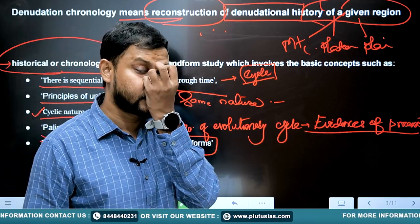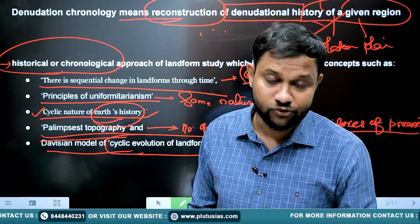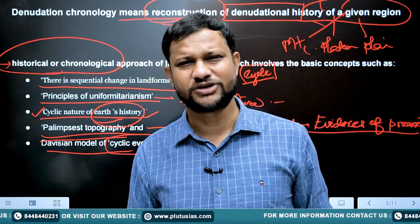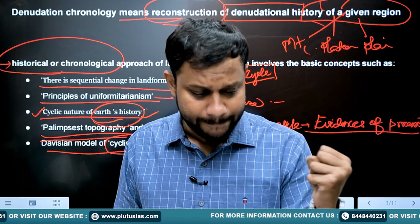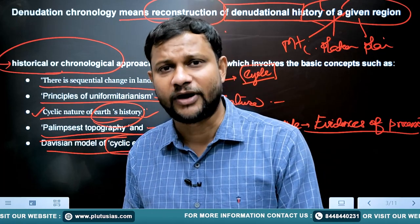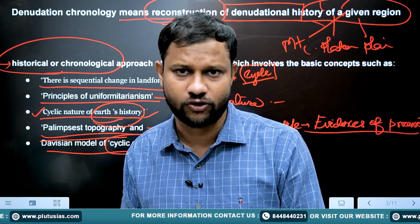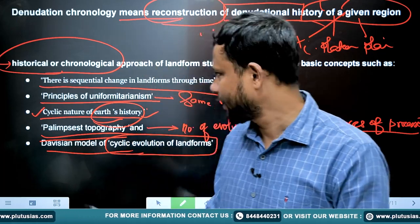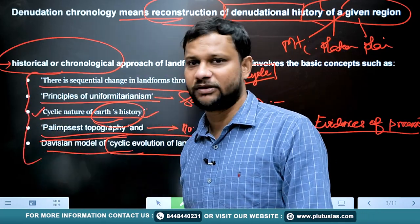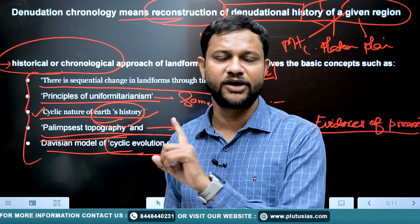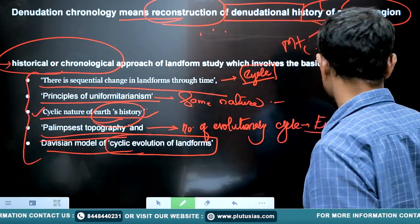The fifth founding principle is Davis's model of cyclic evolution of landforms, one of the most landmark models in landform evolution. It prescribes the evolution of landforms through youth, mature, and old stages of their life. These are the key founding principles of denudational chronology.